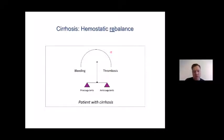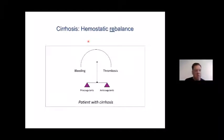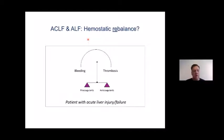The theory of rebalanced hemostasis was really developed using patients that are not extremely sick — mostly compensated patients or patients that are decompensated, but still in a stable condition. The question arises: what happens when patients become really ill? What happens to patients with acute decompensation and ACLF, and what happens to patients with acute liver failure? I will try to convince you today that these patients are also in some sort of hemostatic rebalanced status.